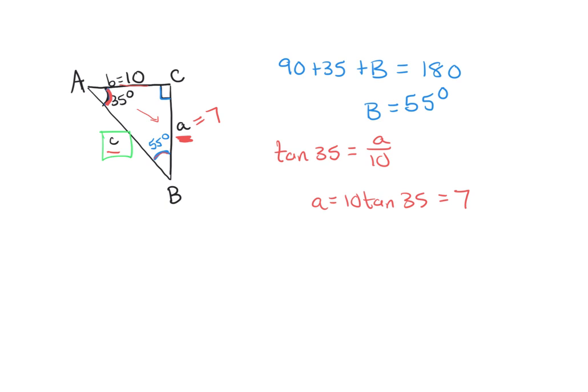All we have left is to find C. We can use right triangle trig or, because it's a right triangle and we have two side lengths, we can use the Pythagorean theorem. So 10 squared plus 7 squared equals C squared, and when you solve that you get that C is about 12.2.